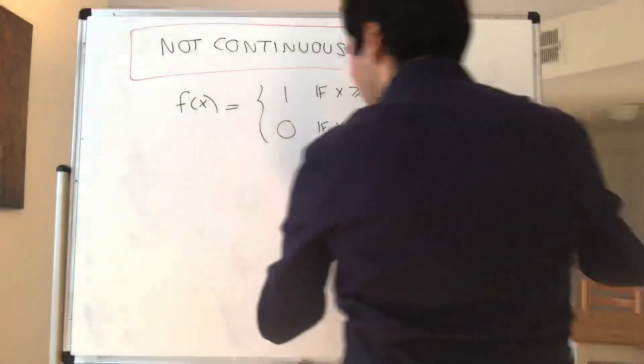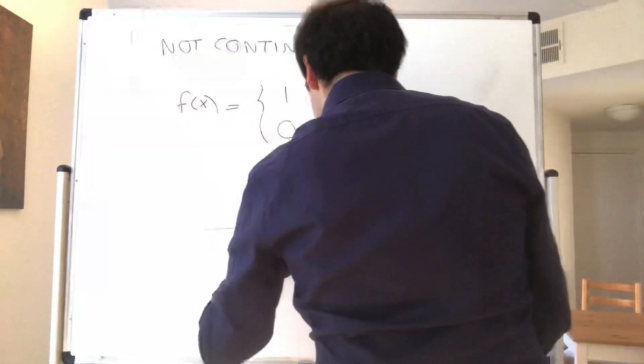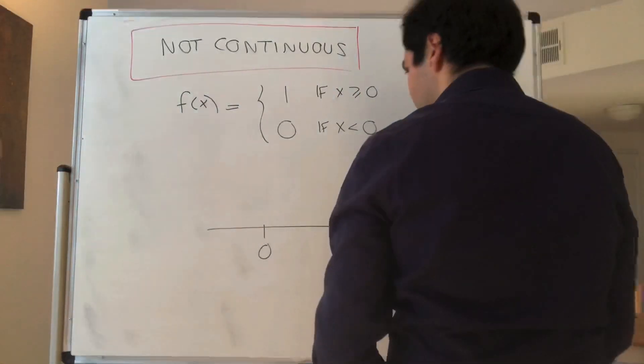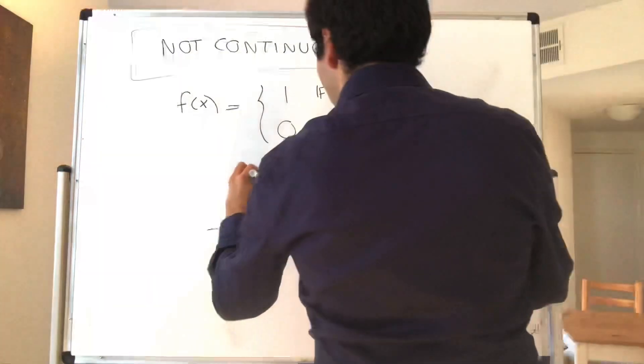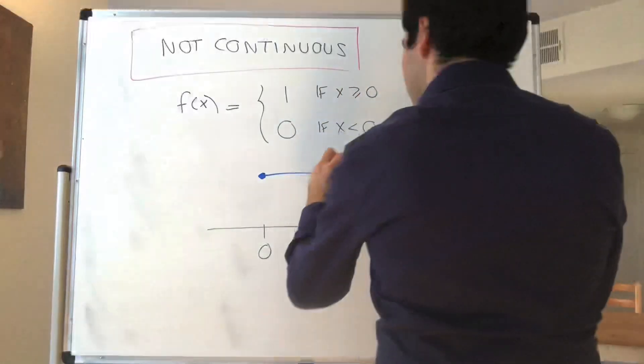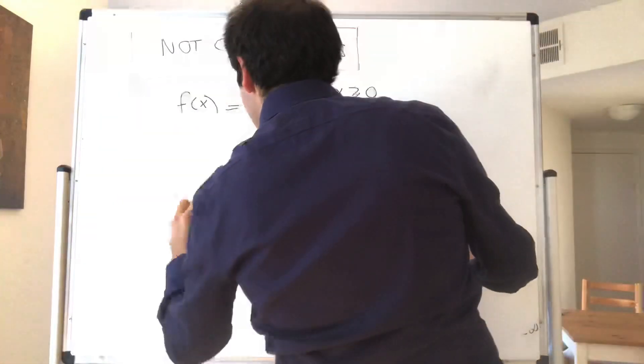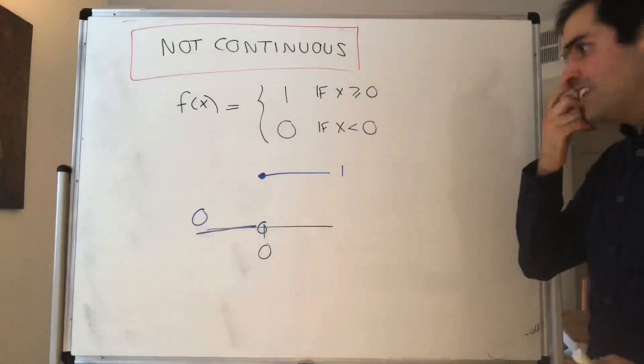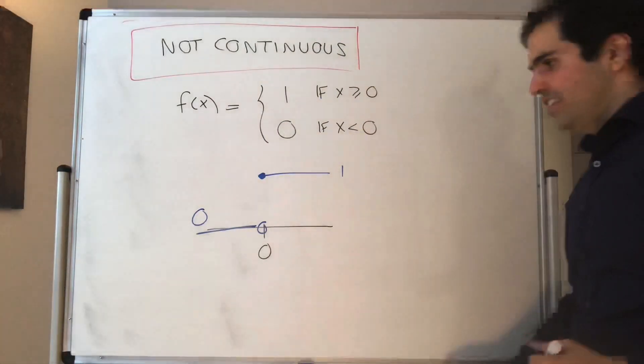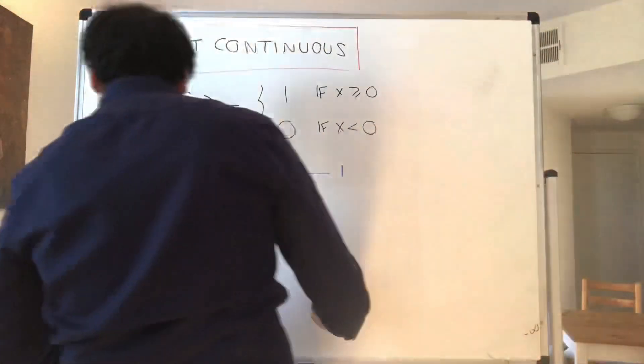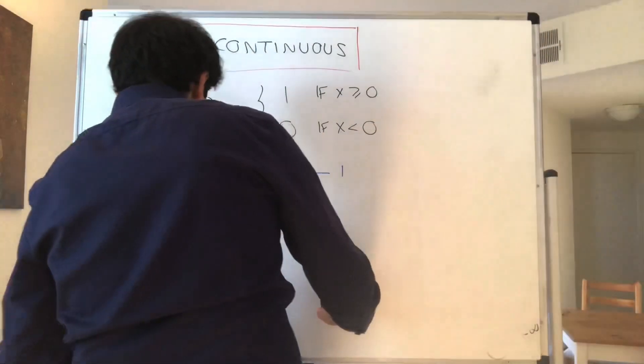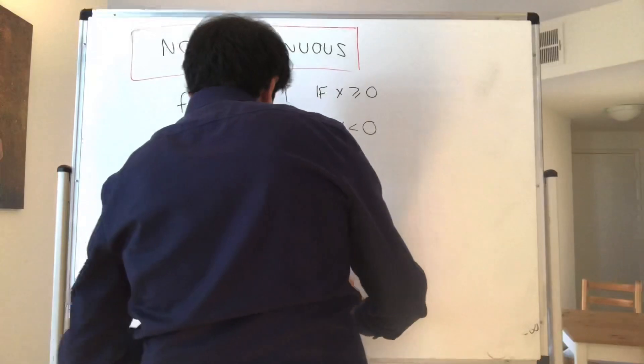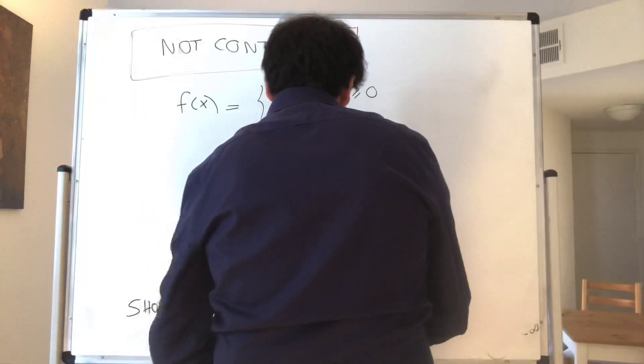So the function, what it looks like at 0, it just switches between being 1 here. So f is 1 here but then 0 here. So in other words this function has a jump discontinuity and let's show that f is not continuous at 0.